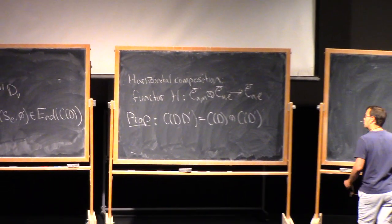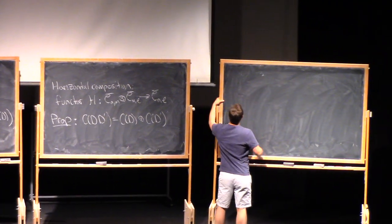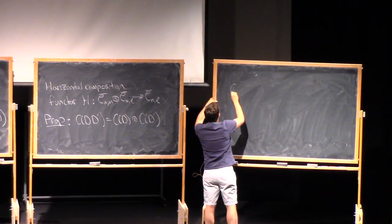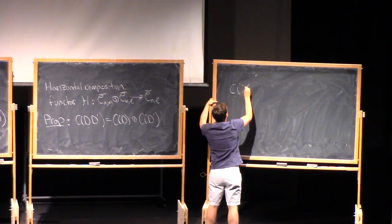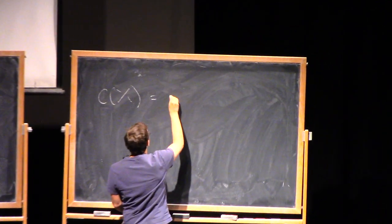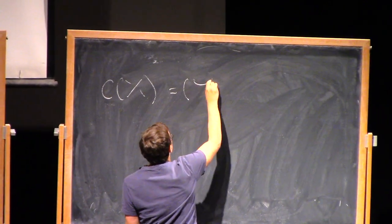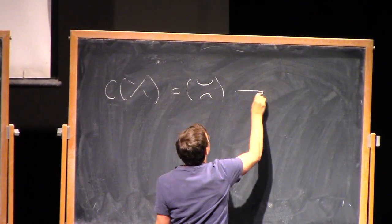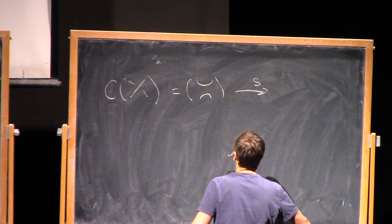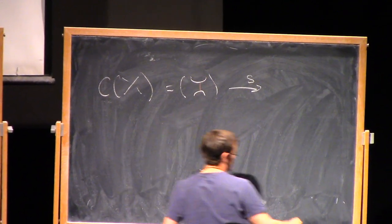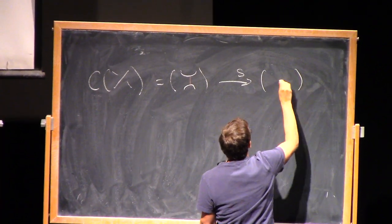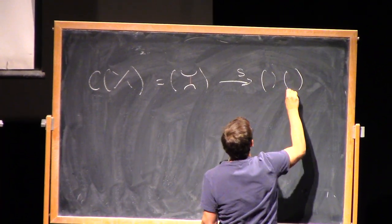Rather than write down a proof, let's notice that C of this crossing here is a complex that looks like this: the zero resolution goes by the one-handle cobordism S — that's where I add a one-handle — to the one resolution. So it's a short complex.